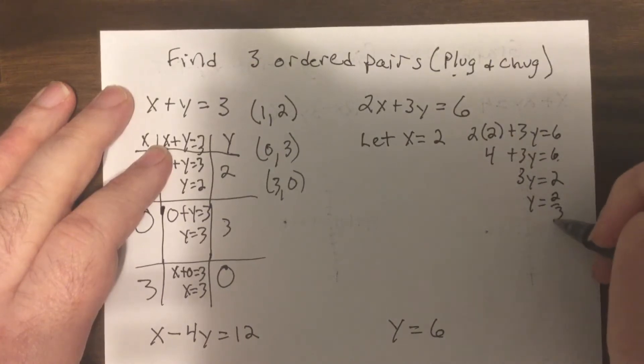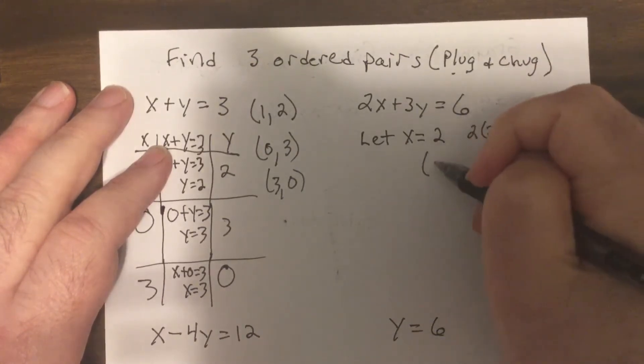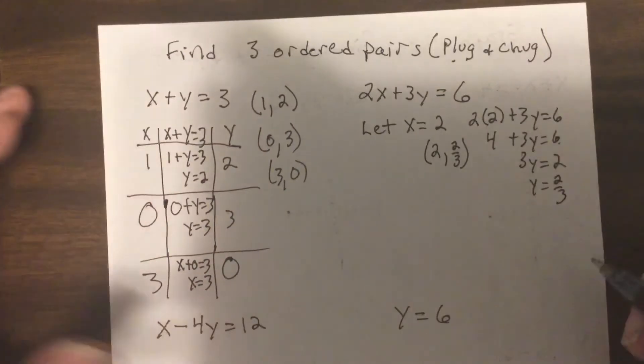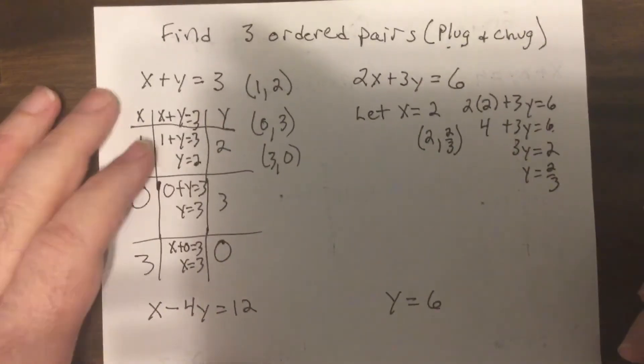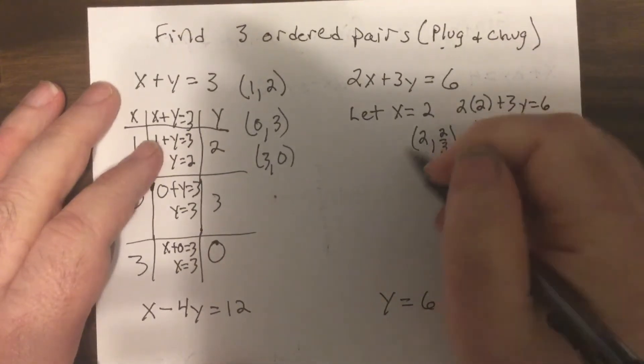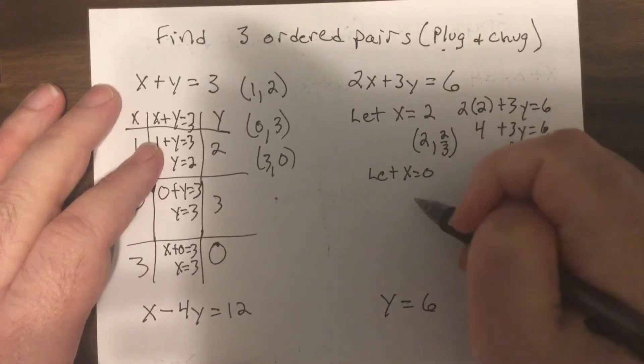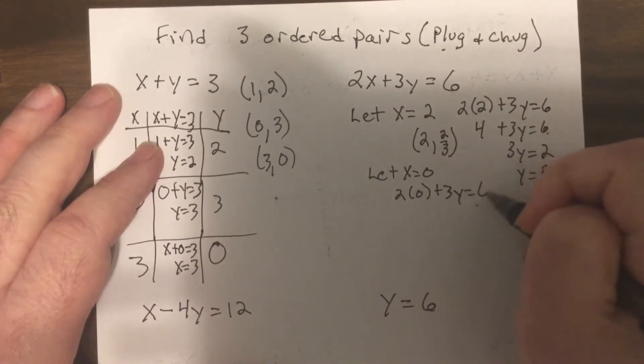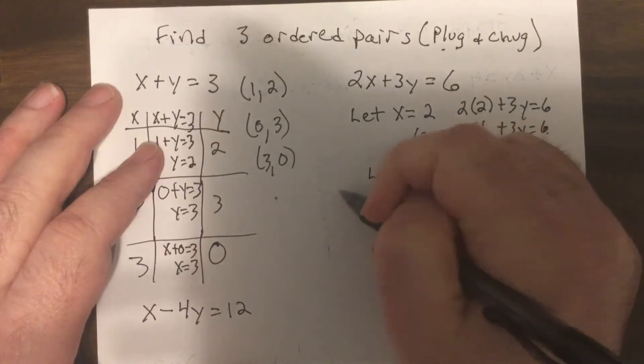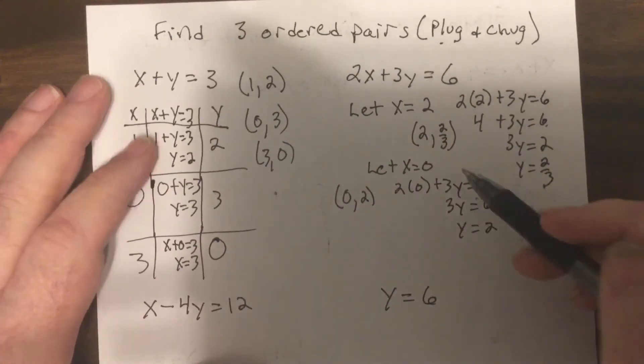Subtract four to get three Y by itself. That would be two, six minus four, so Y equals two thirds. So another ordered pair would be two, two thirds. But again, why not use the zeros? Find the intercepts.